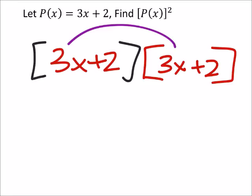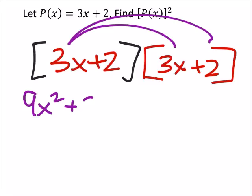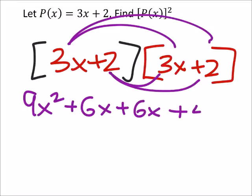So 3x times 3x is 9x squared, and then 3x times 2 is plus 6x. 2 times 3x is plus another 6x, and 2 times 2 is plus 4.